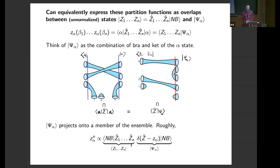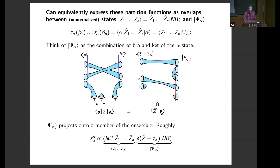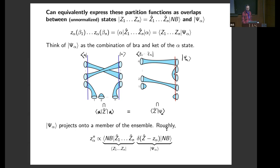We can equally express these partition functions as overlaps between two states: one state is prepared by adding N boundaries corresponding to the observable partition functions, and the other is called Psi_alpha, which we think of as a combination of the bra and ket of this alpha state. Here I've shown a picture of the computation of a correlation function of Z's in the alpha state, which is supposed to be equal to a product of partition functions. We have our N partition function boundaries at the bottom interpreted as observables, here reinterpreted as making a state. Then we take all the boundaries preparing the bra and ket, put them together behind the red line, and think of them as making a new state Psi_alpha. Psi_alpha projects onto a member of the ensemble — roughly, we can think about it as corresponding to inserting a delta function in our averages. These overlaps need to factorize: the overlap of Z_N with Psi_alpha is a product of N partition functions.